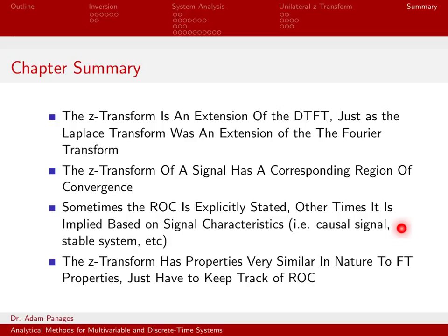Other times, they're a little trickier, and they kind of imply what the region of convergence is. For instance, sometimes they tell you you're dealing with a causal system or some causal signal — that implicitly tells you what the region of convergence is. We know if it's a causal signal, the region of convergence has to be outside of the circle. Or if we're dealing with a stable system, that means the region of convergence has to include the unit circle, because it's only for stable systems with absolutely summable impulse responses that we will have the unit circle in the region of convergence. So sometimes the ROC is explicitly stated; sometimes there are clue words that you have to look out for.